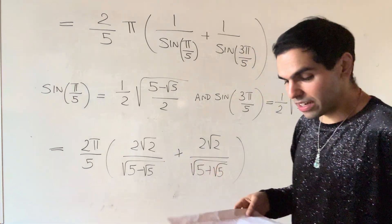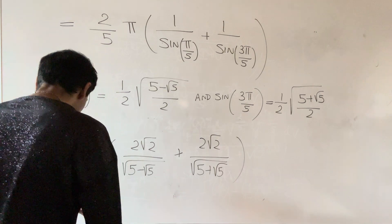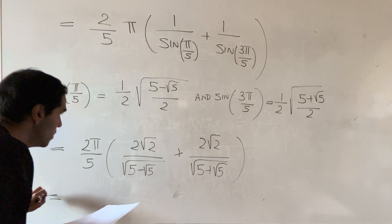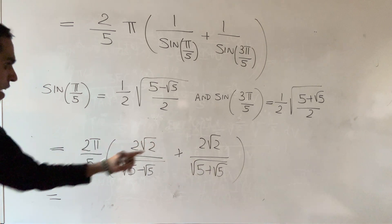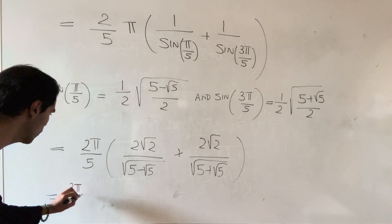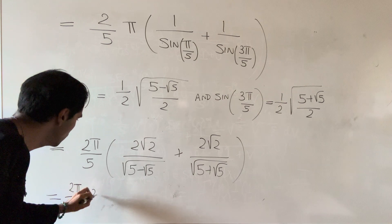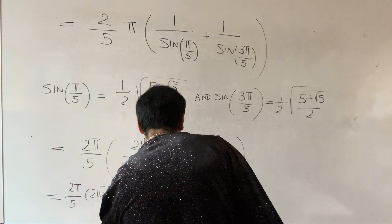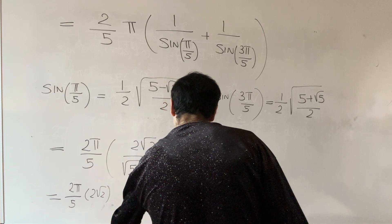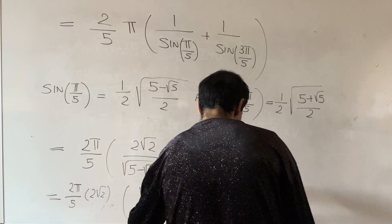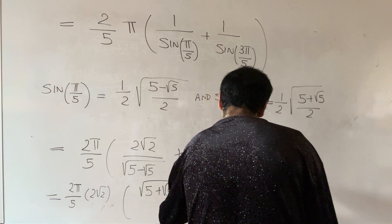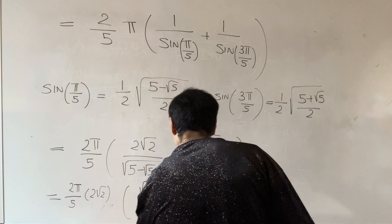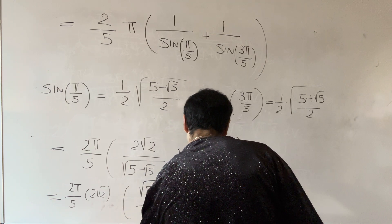Let's put this on a common denominator. We do have a common factor of two square root of two. So we write two pi over five times two square root of two, and for the rest we put on a common denominator: the square root of five plus square root of five plus square root of five minus square root of five, and the product becomes square root of twenty-five minus five.